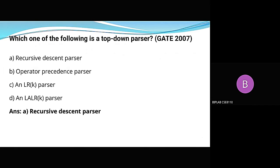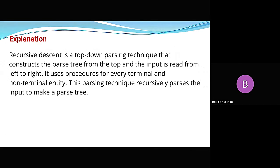The next question, which appeared in GATE 2007, asks: which one of the following is a top-down parser? The options are recursive descent, operator precedence, LR(k) parser, or LR(k) parser. The correct answer is recursive descent parser. Recursive descent is a top-down parsing technique that constructs the parse tree from the top, and the input is read from left to right. It uses procedures for every terminal and non-terminal entity.